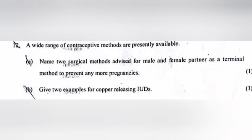Question 12: A wide range of contraceptive methods are presently available. Name two surgical methods advised for male and female partner as a terminal method to prevent any more pregnancies. Answer: Male — Vasectomy, Female — Tubectomy.